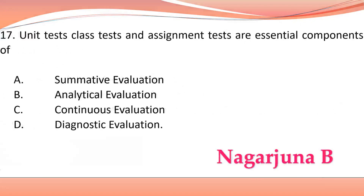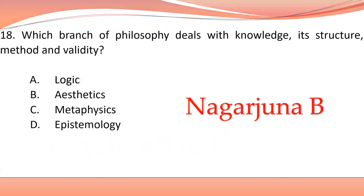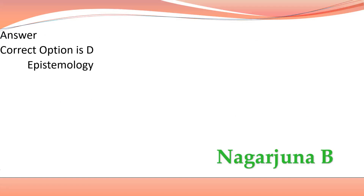The 17th question's answer is option C, continuous evaluation. The next question is: which branch of philosophy deals with knowledge, its structure, method, and validity? The answer for this particular question is option D.